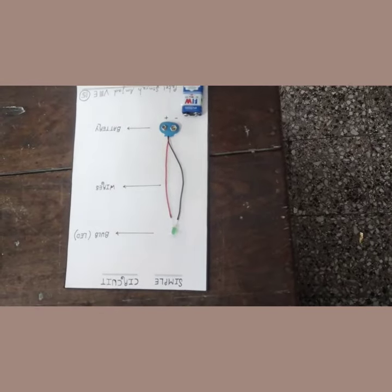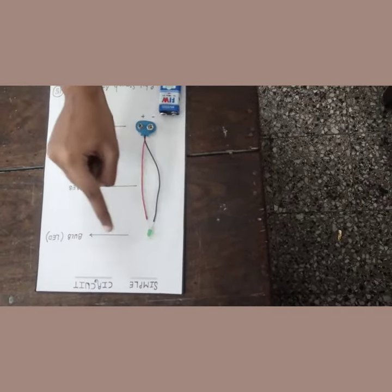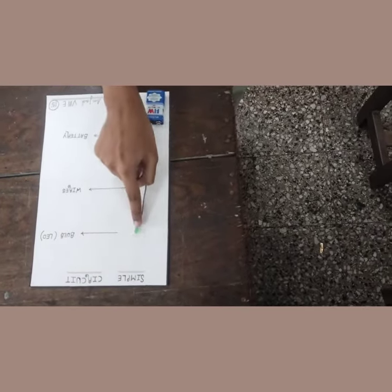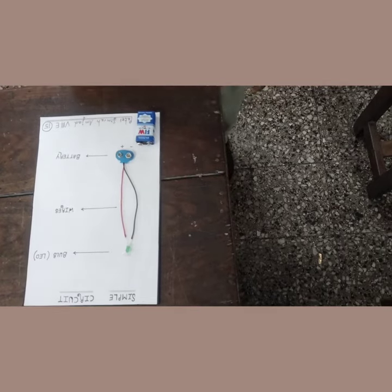To make the circuit, first we need to join the positive wire with the positive terminal of the LED which is called anode, and join the negative wire with the negative terminal of the LED which is called cathode.